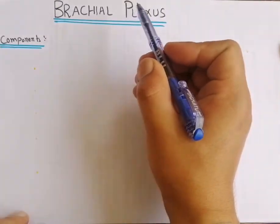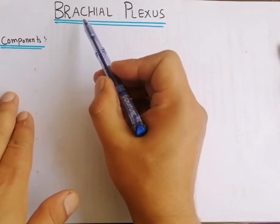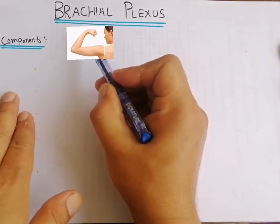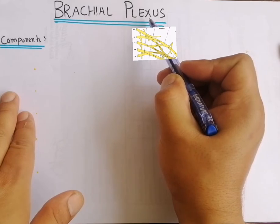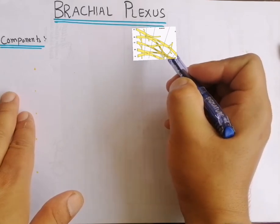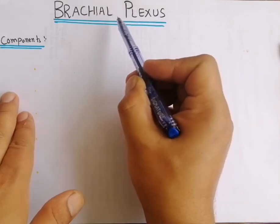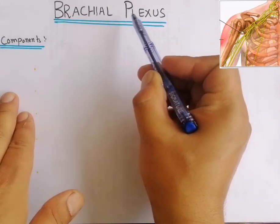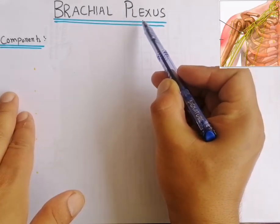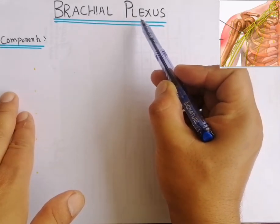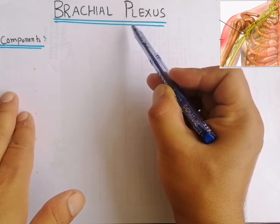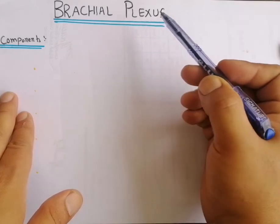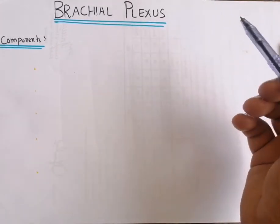Brachial plexus: 'brachial' is related to 'brachium' which means arm, while 'plexus' is a collection of neurons. So brachial plexus is a collection of neurons in the upper arm which supply the skin and musculoskeletal system of the arm.